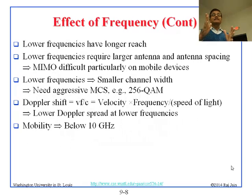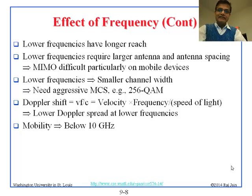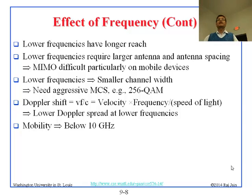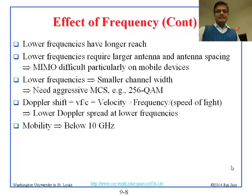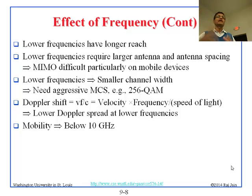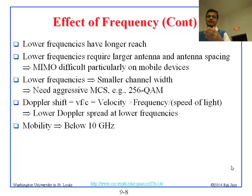Just the opposite: lower frequencies have longer reach. Lower frequencies require larger antennas and antenna spacing. If you want to put four antennas on an 802.11n device they fit compactly, but at one-third that frequency you would need a much larger space — you would have to put the antenna on the ceiling or the roof. That is what we used to do for TV antennas. MIMO is very difficult at low frequencies because you cannot fit enough antennas. Lower frequencies have a smaller channel width — you have only 4 or 5 MHz and need really aggressive modulation like 256-QAM, whereas at 60 GHz you could use binary schemes.